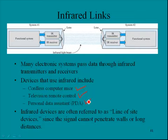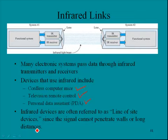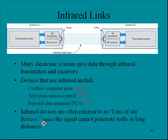Infrared devices are often referred to as line-of-sight devices, since the signal cannot penetrate walls or travel long distances. If you're using a TV remote and someone steps in front of you, or there's glass in the way, the TV won't respond — because these are line-of-sight, typically short-range devices. Though the text doesn't mention it, infrared devices usually operate up in the terahertz frequency range.